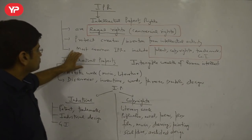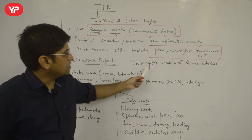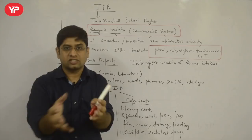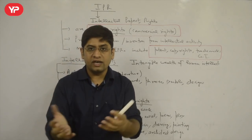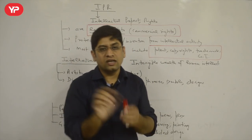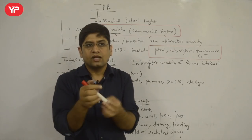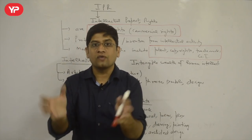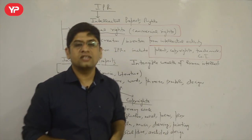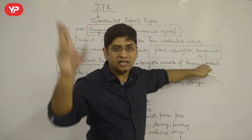Now, what is intellectual property? The definition is: intangible wealth of human intellect. 'Intangible' means something which you cannot touch. For example, a book is tangible — you can feel it, you can touch it. But intellectual property like WhatsApp — it's code, it's software — you cannot touch the software. Music written down is also intangible property, but it comes from our mind.